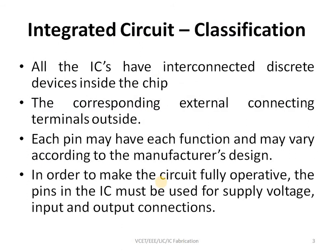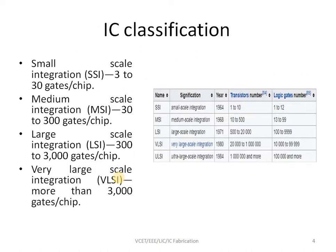Integrated circuits can be classified based on the number of components, transistors, or gates that can be accommodated. Based on this, the classification is made into four different categories: small scale integration, medium scale integration, large scale integration, and very large scale integration — based on the number of transistors or logic gates that can be accommodated into a single chip.